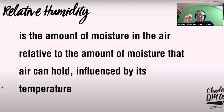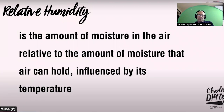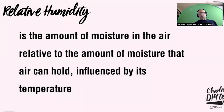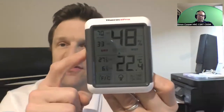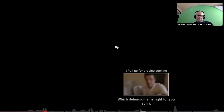When air gets warmer, molecules expand and hold more moisture. When air cools, they get smaller and moisture condenses out - it's like wringing out a sponge. Relative humidity is the amount of moisture in the air relative to what that air can hold at its temperature. Crucially, the warmer the air, the higher its capacity to hold moisture. So when you turn the heating on, the relative humidity reading drops - but that doesn't mean moisture content has dropped. You're just masking the problem.